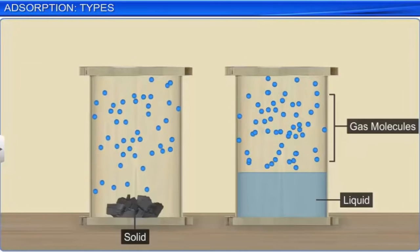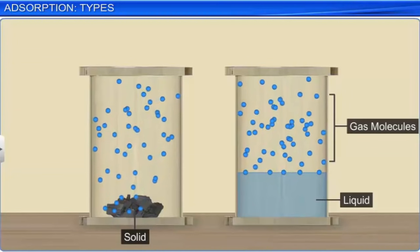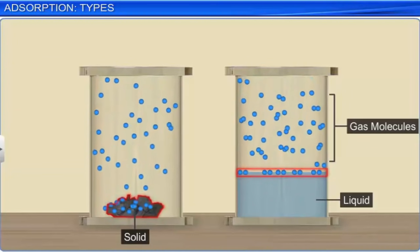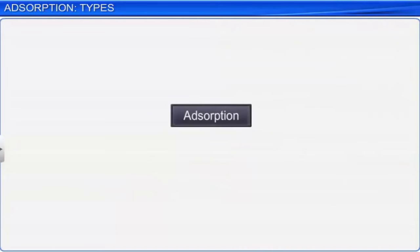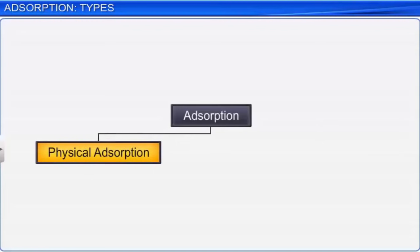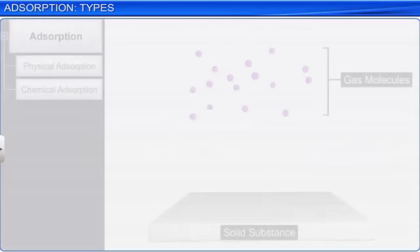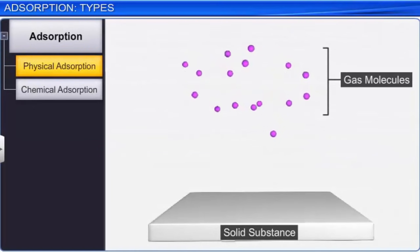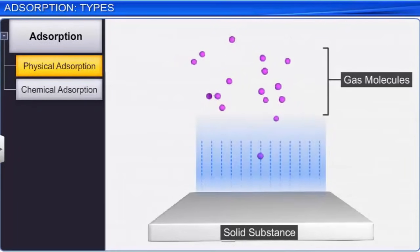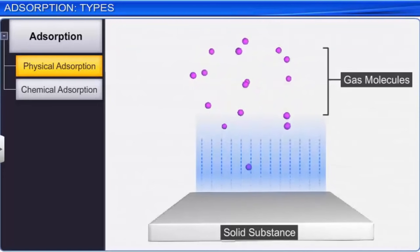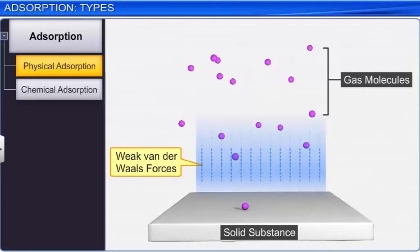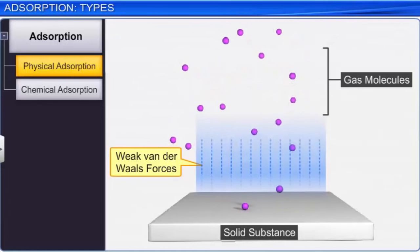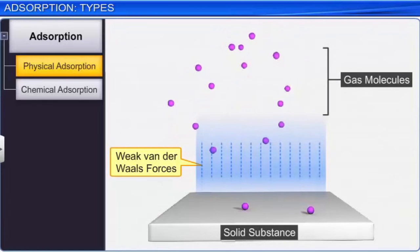Adsorption of gases on solids can be of two types: physical adsorption and chemical adsorption. In physical adsorption, also known as physisorption or van der Waals adsorption, gas molecules or atoms are held to the surface of a solid by weak van der Waals forces.